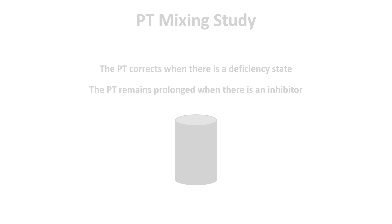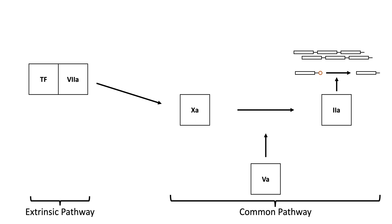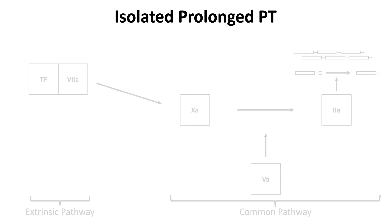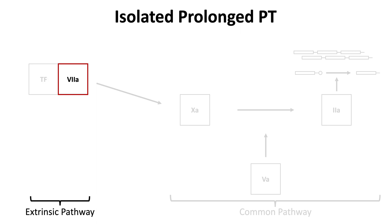The second step in evaluating a prolonged PT is to investigate the cause. Returning to our concept map of the coagulation cascade, when there is an isolated prolonged PT, the defect is in the extrinsic pathway, which consists of factor VII and tissue factor. Because tissue factor remains behind the scenes until there is endothelial injury, the defect is most likely to be in factor VII. Thus, an isolated prolonged PT could be due to factor VII deficiency or a factor VII inhibitor.